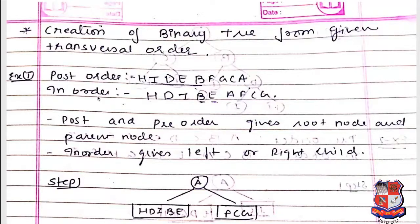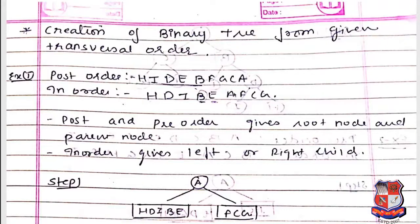We read the post-order sequence in reverse to find root nodes. The last element A is the root of the tree. Then we locate A in the in-order sequence to divide the tree into left and right subtrees.